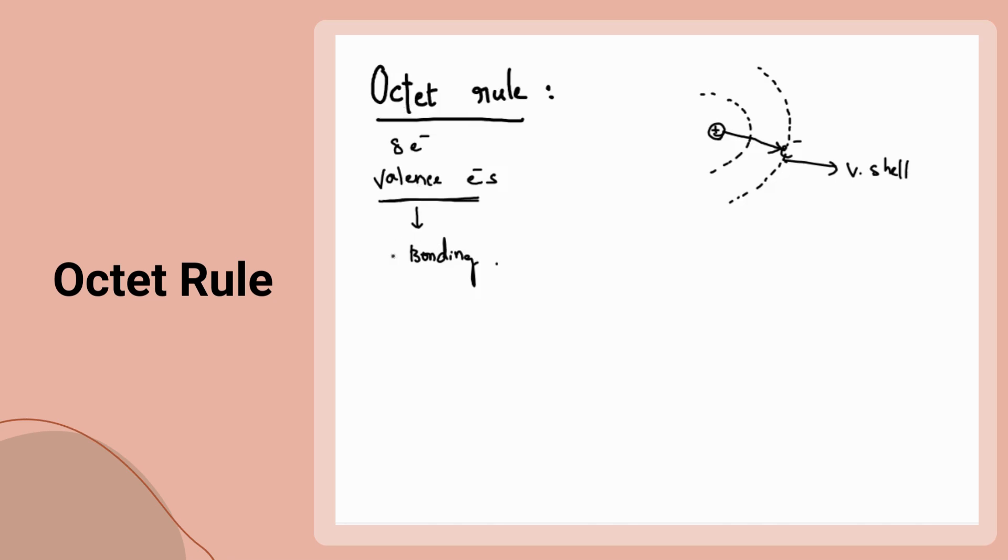What is this octet rule? This octet rule was proposed by scientist Lewis. He says that if an atom or molecule contains eight electrons in its outermost shell—that means eight valence electrons—it is said to be stable.